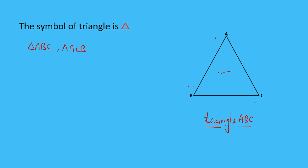We can also start with vertex B — writing △BAC or △BCA. Or we can start with vertex C — writing △CAB or △CBA. So for one triangle there are many options to write its name. You can write the name of this triangle in any of these ways.